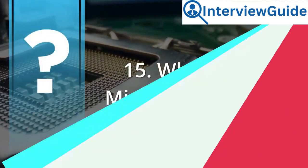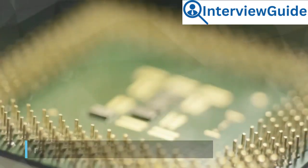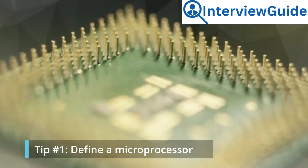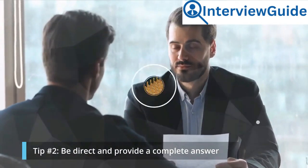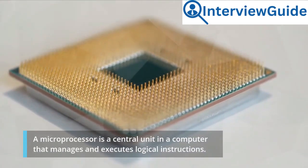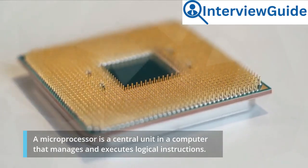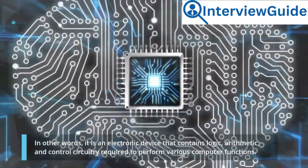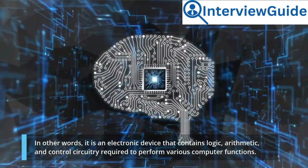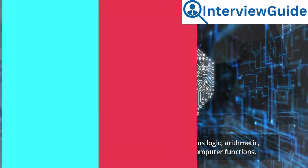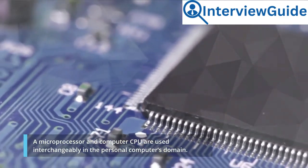Question 15: What is a microprocessor? The interviewer wants to test your familiarity with this term. Tip number 1: define a microprocessor. Tip number 2: be direct and provide a complete answer. Sample answer: A microprocessor is a central unit in a computer that manages and executes logical instructions. In other words, it is an electronic device that contains logic, arithmetic, and control circuitry required to perform various computer functions. A microprocessor and computer CPU are used interchangeably in the personal computer's domain.